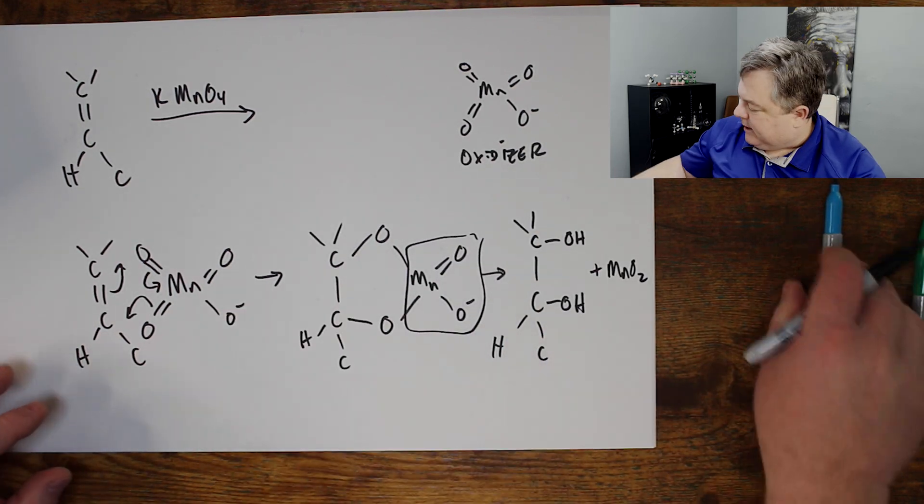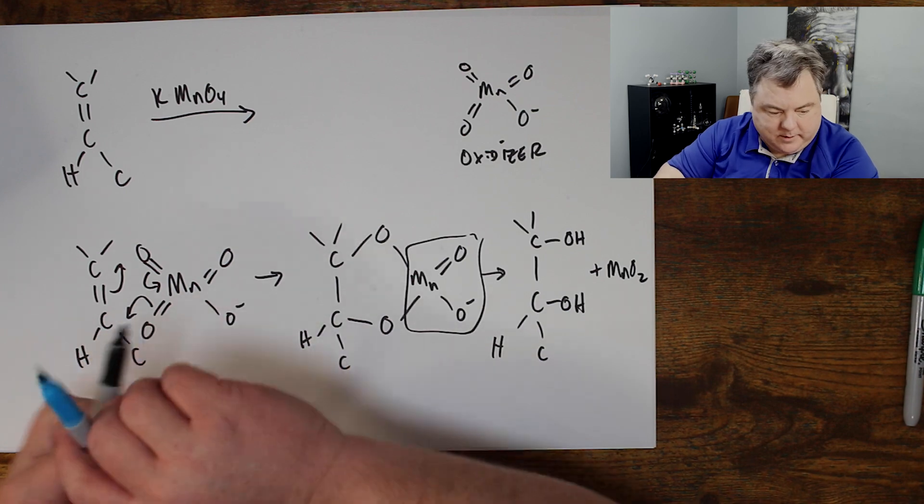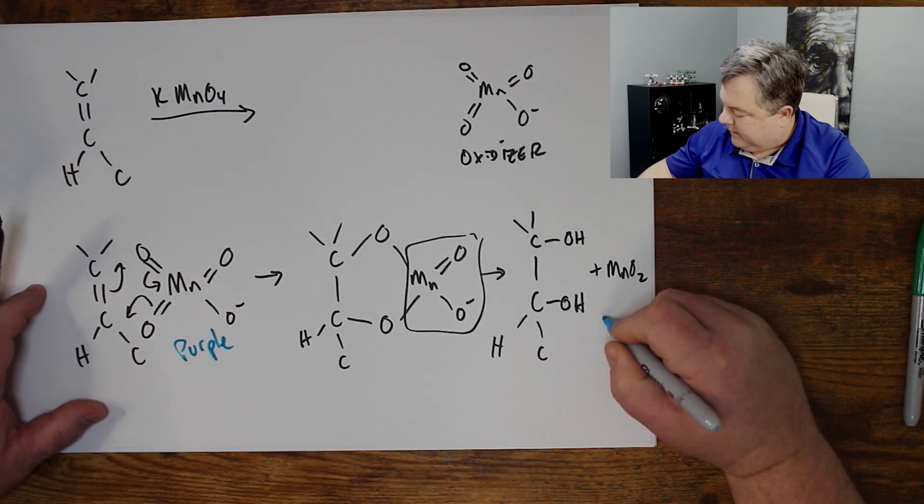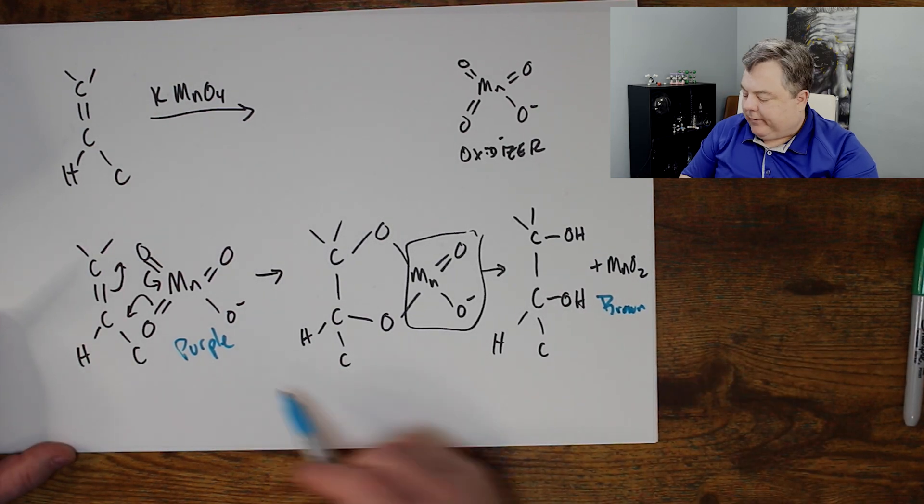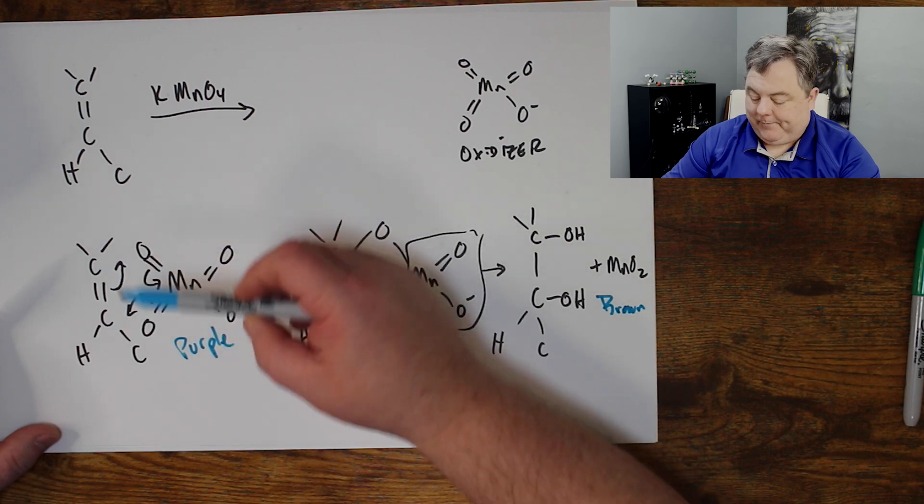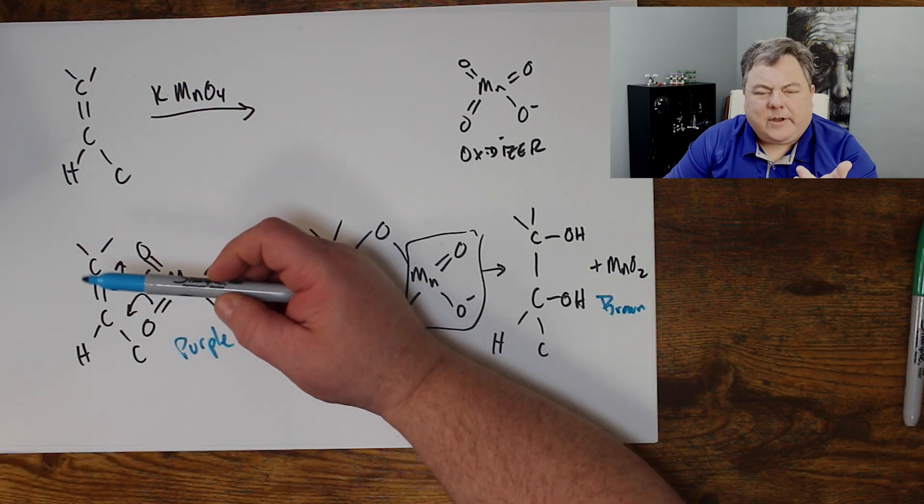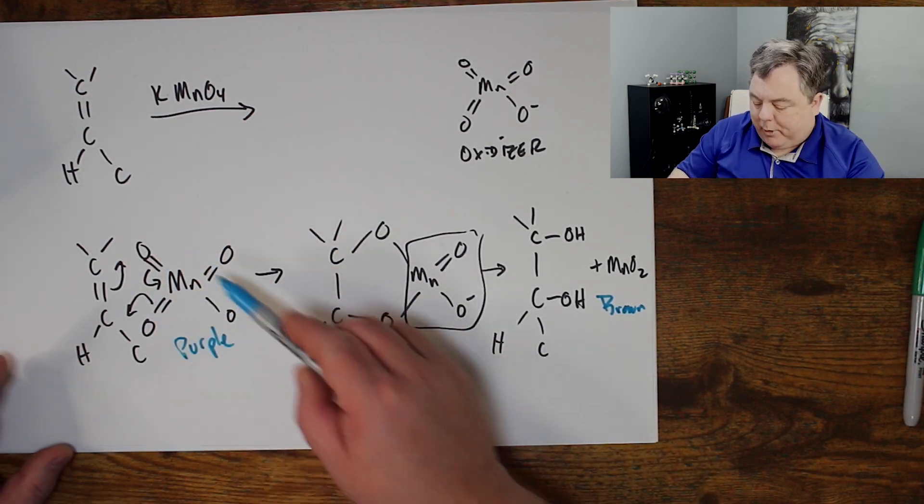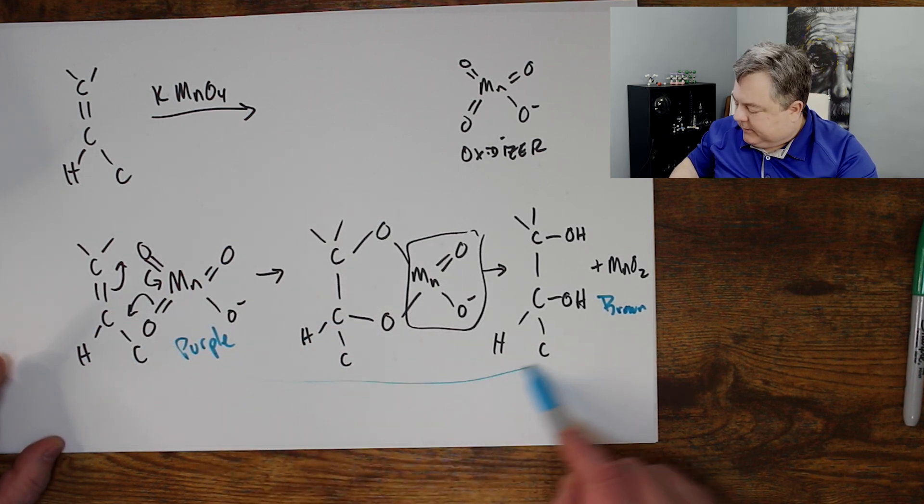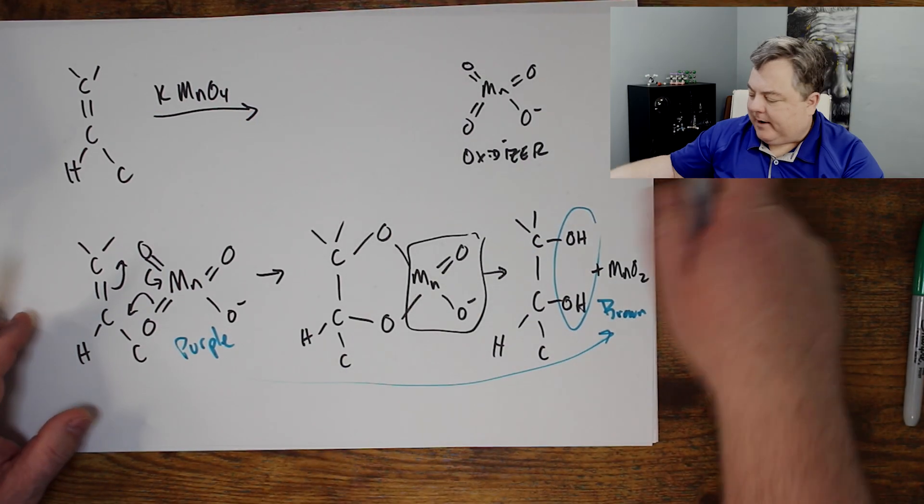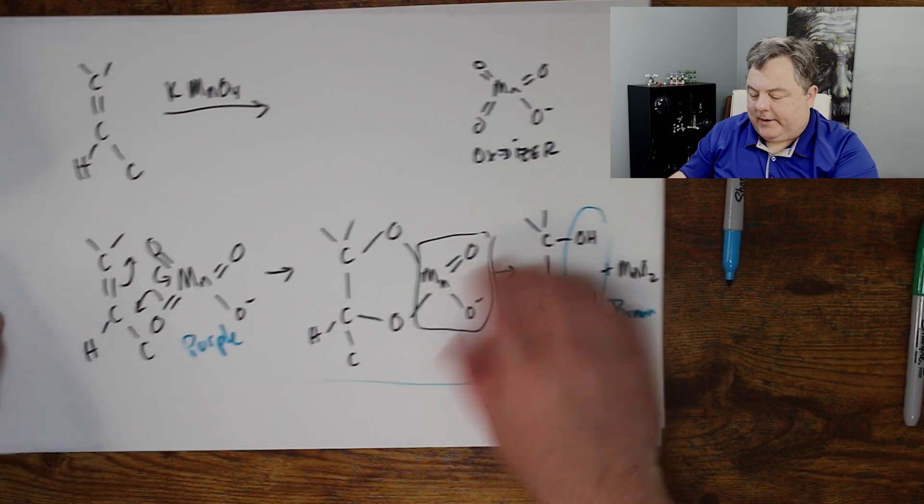Now, this is a purple compound. This is brown. So this is also a test if you have double-bond compounds. If I put purple potassium permanganate, and if there's a double bond, it reacts, and this turns into this brown manganese dioxide compound. So if the purple becomes brown, I bet I have double-bonds in there. That's how you put two OH groups on at the same time on that double bond.